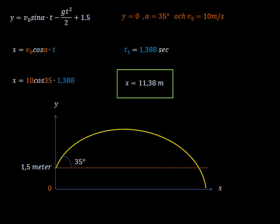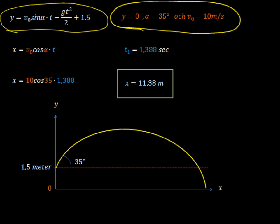So, to repeat, we needed to write down everything that we knew. That's really, really important. We needed to use the y function here in order to find the time that it took before the ball hit the ground. Once we knew the time, we could plug it into the x position equation and find out just how far it went.